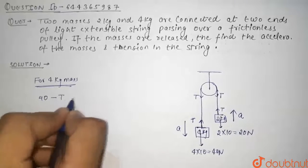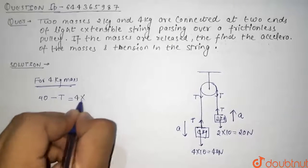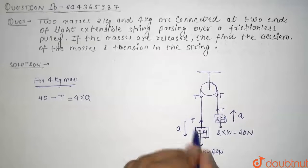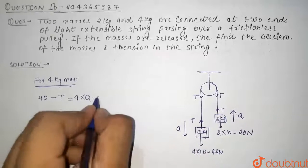40 minus tension is equal to 4 into acceleration, that is mass of 4 kg into acceleration. 40 minus T equals 4a. This is our first equation.